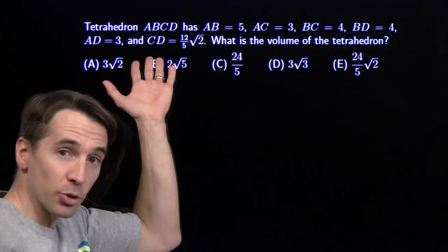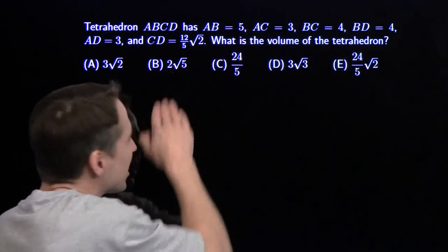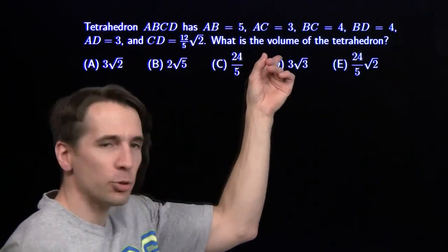We've got a little 3D geometry here. We've got a tetrahedron. We're given all six of its edge lengths, and we need to find the tetrahedron's volume.